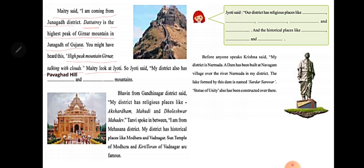Bhavin from Gandhinagar district said: my district has religious places like Akshardham, Mahudi, and Doleshwar Mahadev temple. These are the three religious places Bhavin noted for the capital of Gujarat, Gandhinagar.